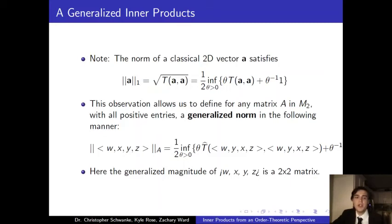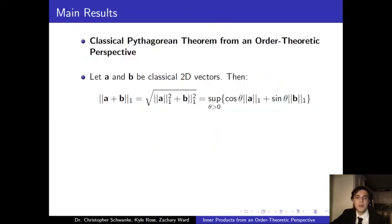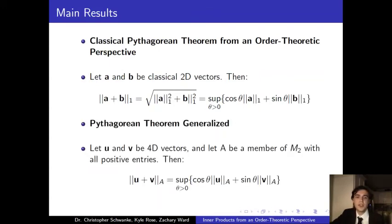With these new definitions of inner product and norm, we are able to update the previous Pythagorean theorem. We first have our classical version with 2D vectors, now with an order theoretic perspective. Then, a new generalized version that takes 4D vectors and 2 by 2 matrices. In addition, this not only works for Pythagorean theorem, but other famous results.